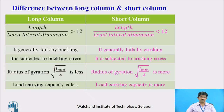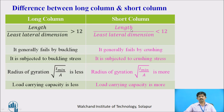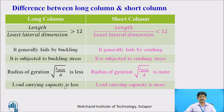The difference between long column and short column: a column is said to be long when the length divided by the least lateral dimension is greater than 12. Least lateral dimension means if you take the cross section of the column, it will have breadth and depth — whichever is least is taken as the least lateral dimension. A short column is when length divided by least lateral dimension is less than 12. A long column fails by buckling and is subjected to buckling stresses, whereas a short column fails by crushing and is subjected to crushing stress. The radius of gyration in a long column is lesser, and the load carrying capacity is lesser for the long column and greater for the short column.